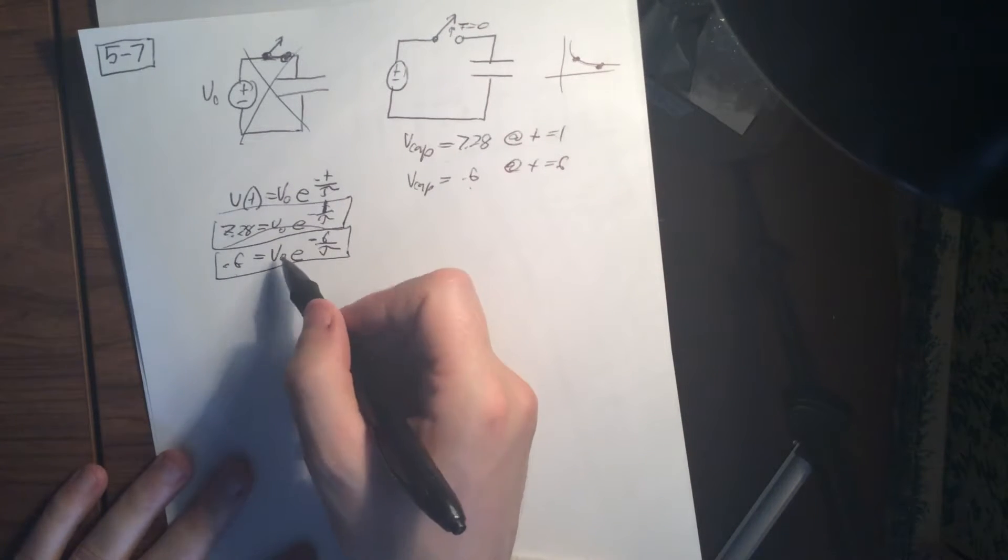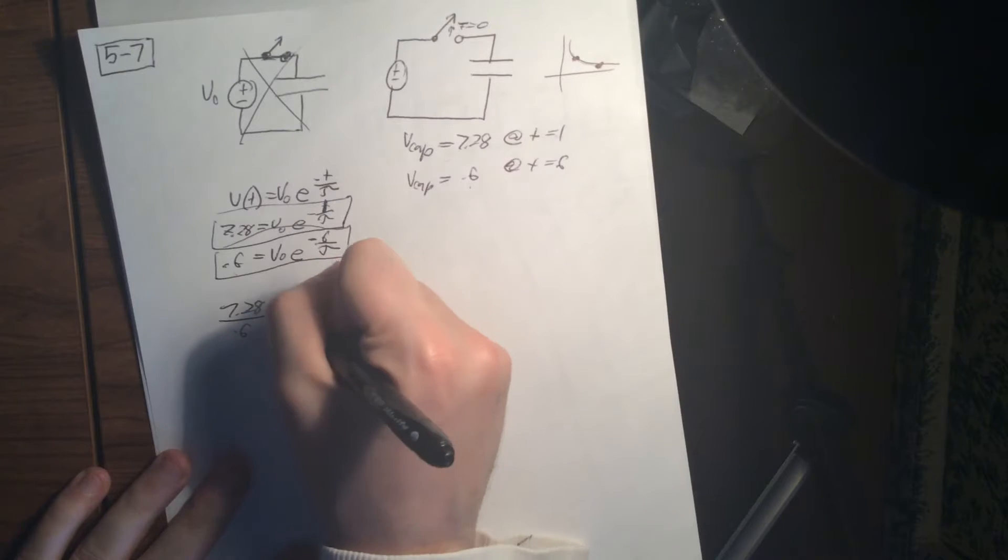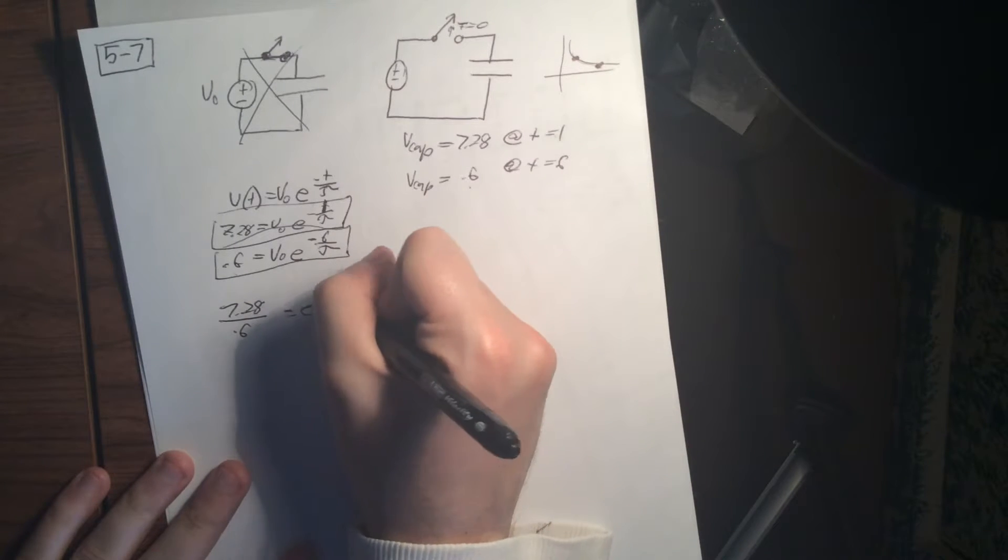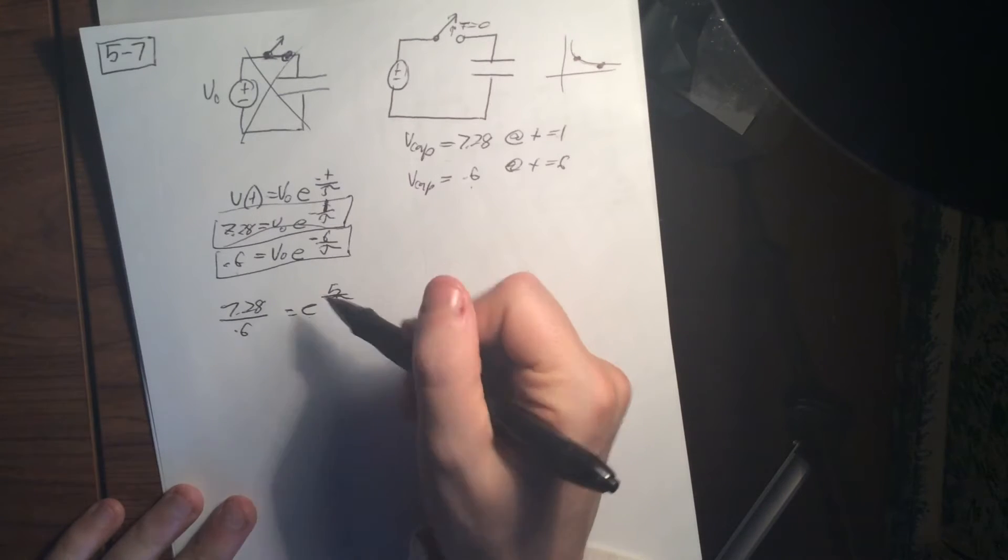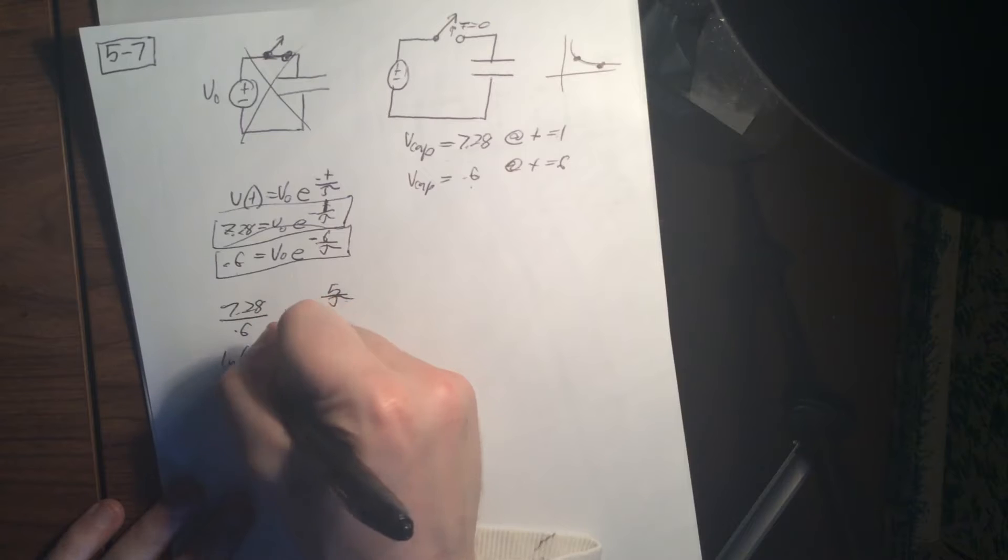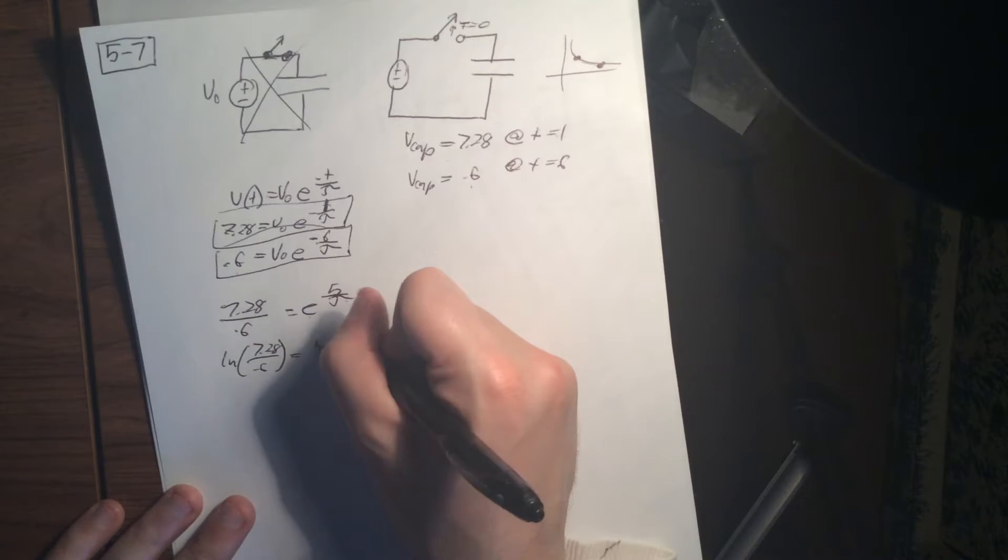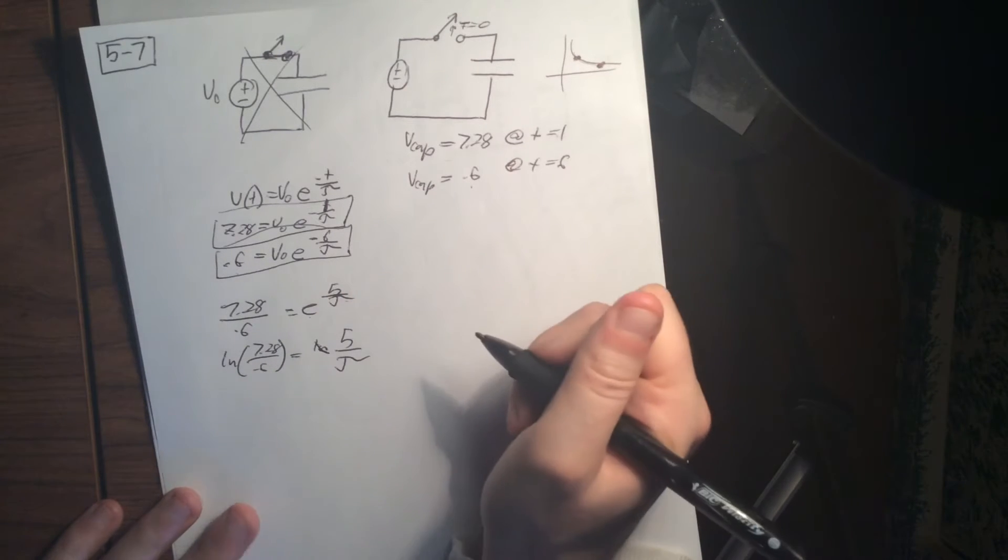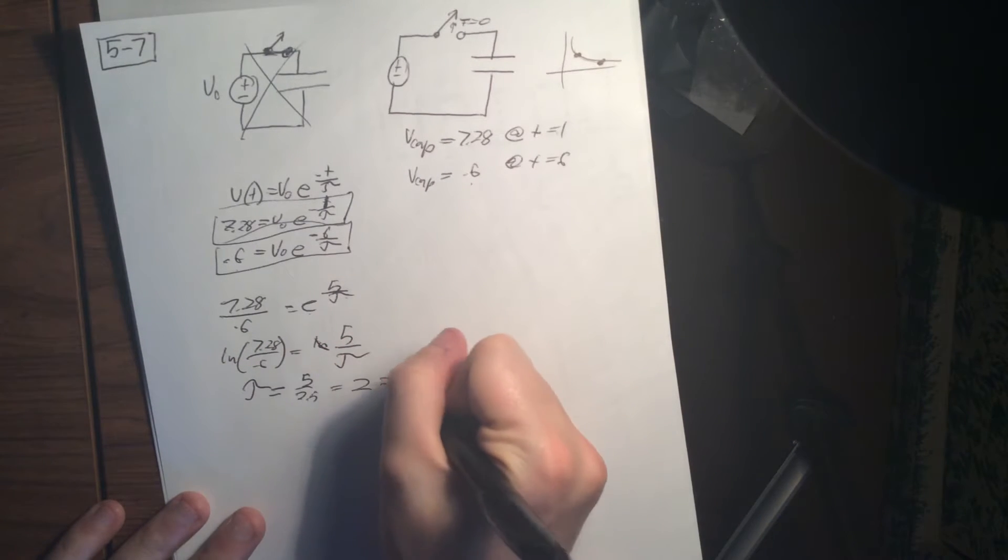So if we solve both of these, you're going to get 7.28 over 0.6 equals e to the 5 over tau. That's just algebra. And then if we want to get rid of an e on both sides, we take the ln of both sides. So ln of 7.28 over 0.6 equals ln of e, which equals nothing, that cancels out to 5 over tau. And that's going to be tau equals 5 divided by 2.5 equals 2.